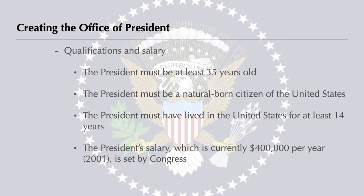To be president, a person must be at least 35 years old and a natural-born citizen of the United States, and must have lived in the United States for at least 14 years. The president's yearly salary, currently set at $400,000 per year, is set by Congress rather than by the Constitution.